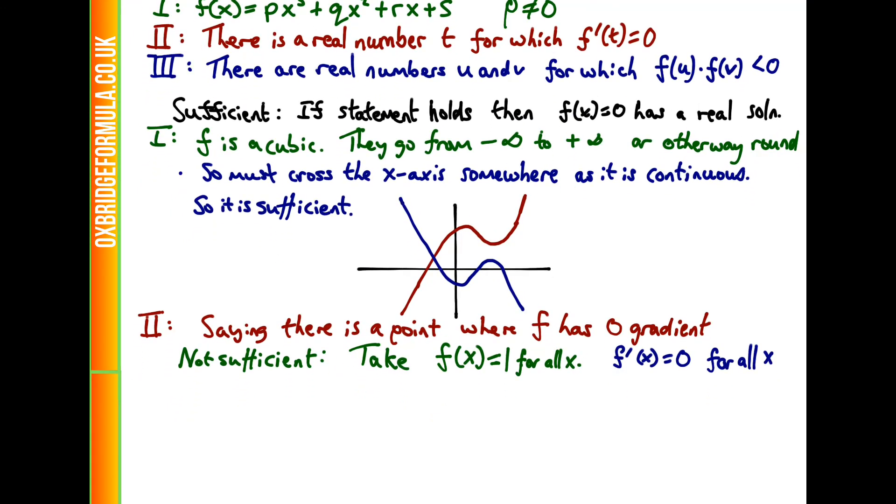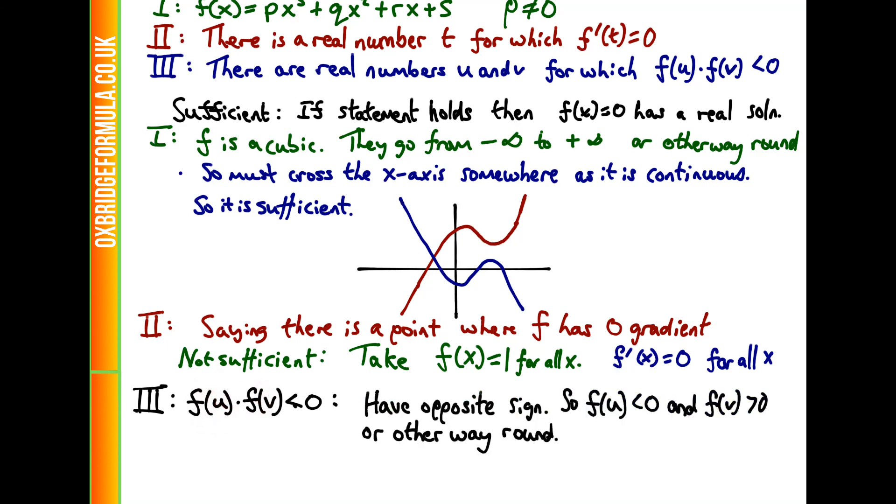What about statement 3? Well, this is saying if there are f(u) times f(v) is less than 0, this means that f(u) and f(v) have opposite signs. So either f(u) is less than 0 and f(v) is bigger than 0, or it's the other way around. So what does this mean? Well, this looks something similar to case 1.